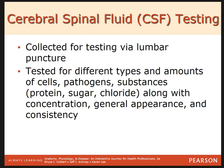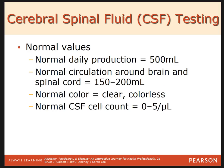Similar to urine, looking at it and seeing if it is turbid, if it is clear, what color it is — that can help with the determination if something is abnormal. The normal values for a lumbar puncture: normal daily production is usually about half a liter or 500 milliliters a day. Normal circulation around the brain and spinal cord is about 150 to 200 milliliters. Its color is generally clear and colorless, and the cell count is usually 0 to 5 cells per microliter.